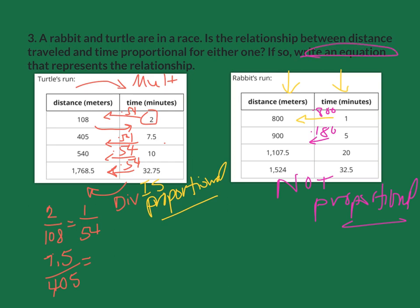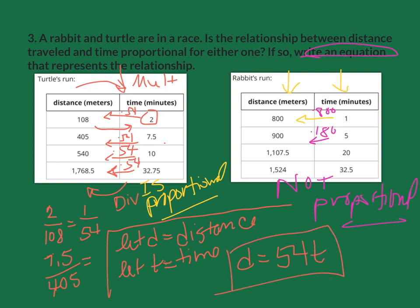Now, write an equation. I'm going to write this out the way that it should look. If I say let D equal the distance, we know that the distance is going to be the constant of proportionality, which we figured out to be 54, multiplied by the time. So there is your equation.